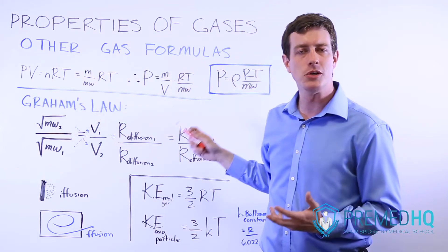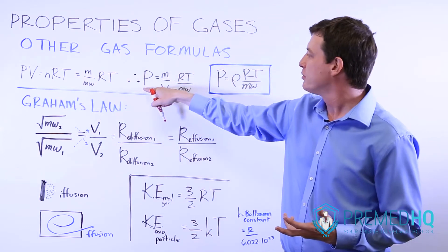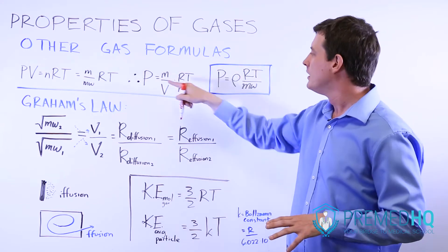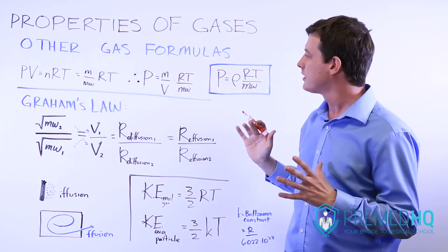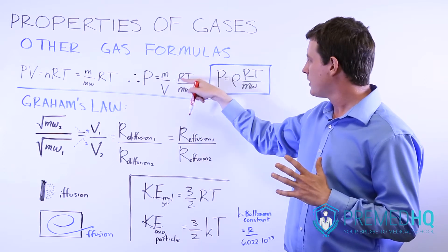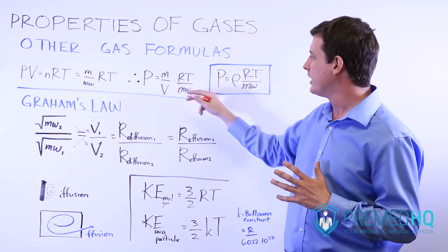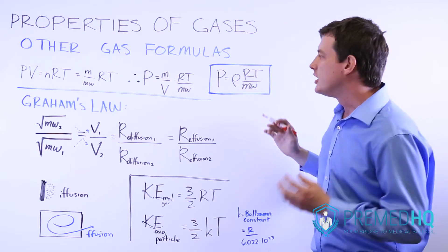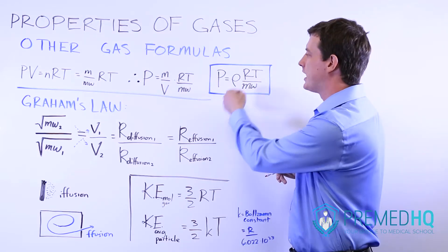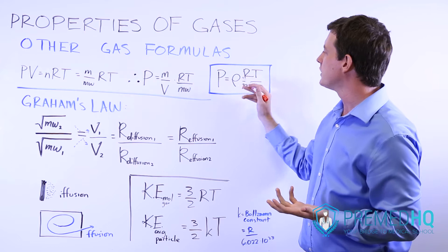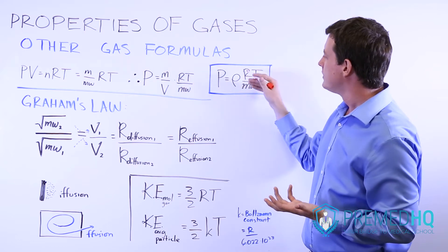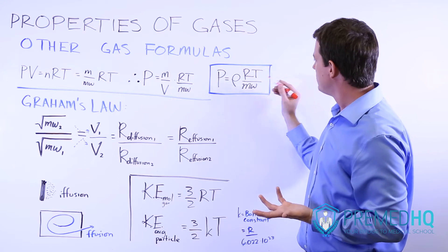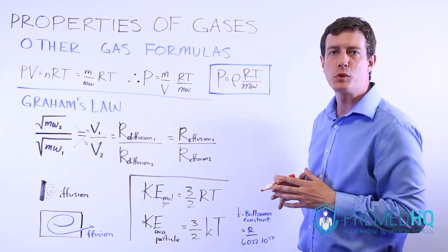We then divide both sides by volume, giving us pressure equals mass in grams divided by volume times RT over molecular weight. Since mass over volume is density, we can express the gas law as: pressure equals the density of the gas times R, the gas constant, times T in Kelvin, divided by molecular weight.